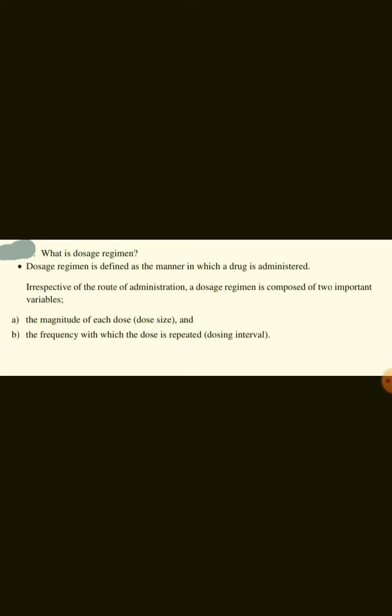What is a dosage regimen? Dosage regimen is defined as the manner in which a drug is administered. Irrespective of the route of administration, a dosage regimen is composed of two important variables: the magnitude of each dose (i.e., dose size) and the frequency with which the dose is repeated (i.e., dosing interval).